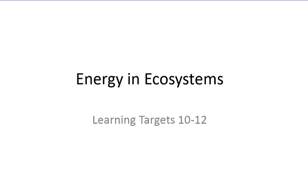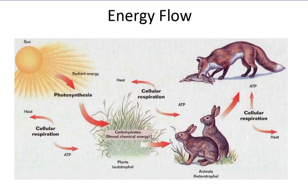This video is learning targets 10 through 12 in the ecology unit, talking about energy and ecosystems. Here we're going to be looking at energy flow and how energy from the sun, where all energy originates, works its way through the ecosystem. All energy on earth comes from the sun and flows through ecosystems.